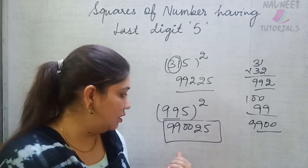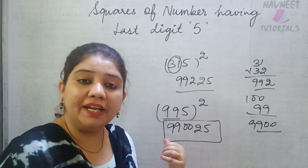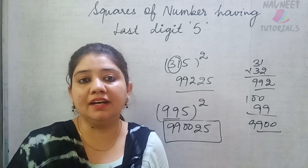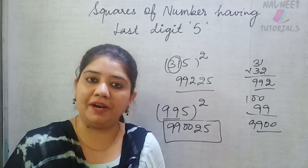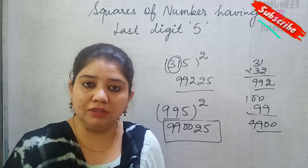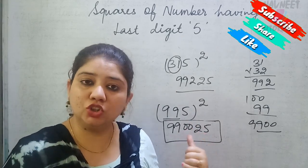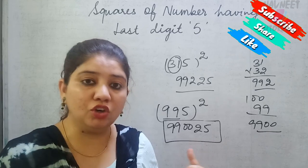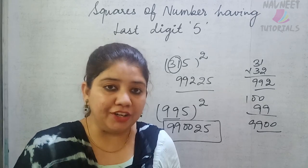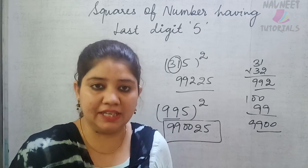This is the easiest method. To see how fast this technique works, you need to practice the values. First understand how the numbers work, then practice. After that, put on a timer and see — can you find the square of a number having unit digit 5 in like 3 seconds?